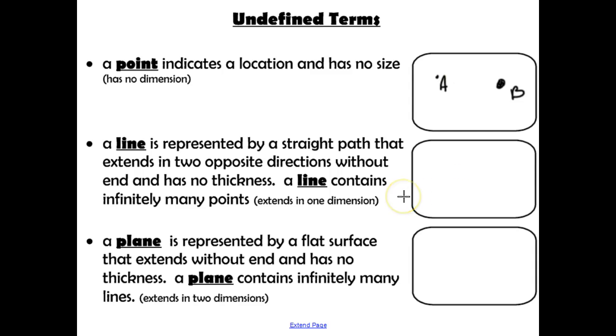A line is represented by a straight path that extends in two opposite directions without end, and it has no thickness. So in order to show that this is going to extend without end, we're actually going to put arrows at the ends of our line.